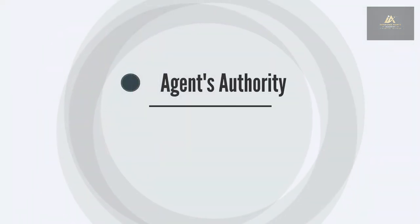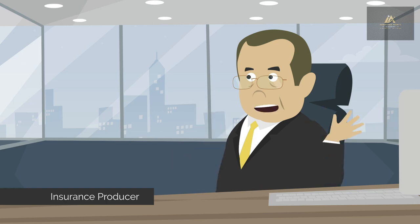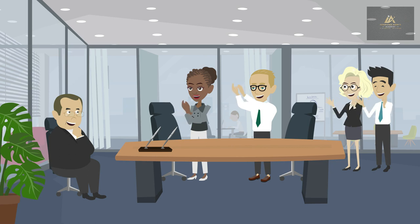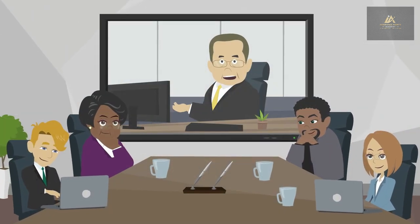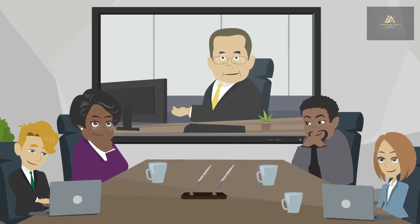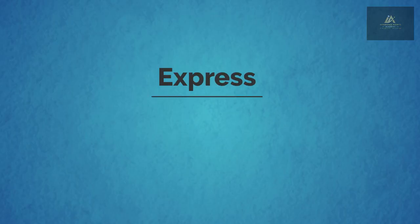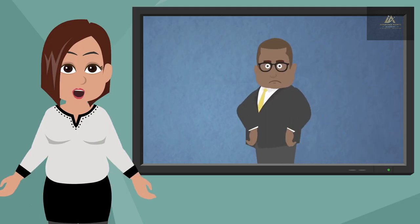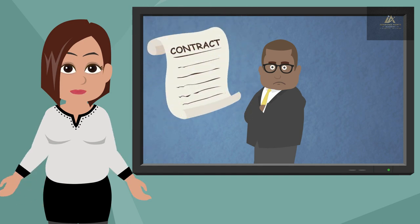Now let's learn about the agent's authority. An agent is a licensed insurance producer who has been appointed to represent an insurance company. As a representative of the insurer, agents are given certain authority to perform acts on behalf of the insurance company, also referred to as the principal. There are three types of agent authority. Express authority is the authority granted to the agent by the principal, which is the insurance company, as written in the agency contract.